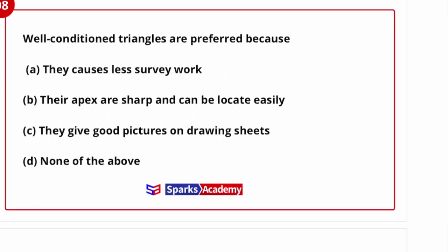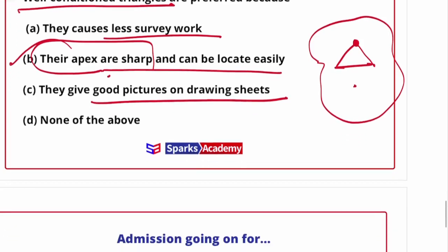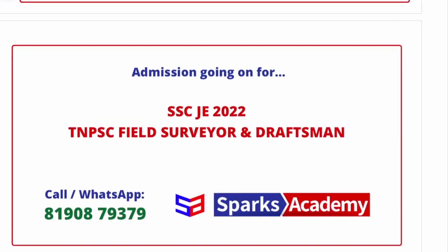Well-conditioned triangles are preferred because: their apex are sharp and can be located easily, they cause less survey work, and allow for good picture and drawing sheets. For example, if you have an area with well-conditioned triangles, we can easily locate that particular station. Well-conditioned triangle angles should not be less than 30 degrees and should not be greater than 120 degrees. The answer is option B: their apex are sharp and can be located easily. Thank you for watching! For questions or admissions, please contact us.